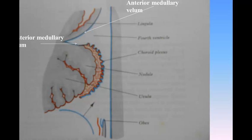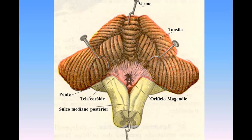Hence this part of the taenia has been termed the cornucopia. The obex is a thin triangular gray lamina, which roofs in the lower angle of the ventricle and is attached by its lateral margins to the clavae.